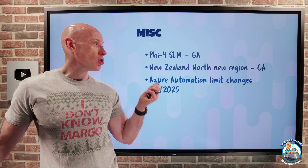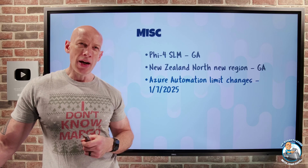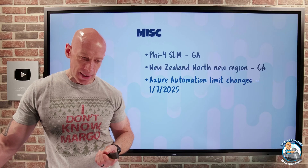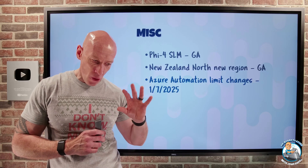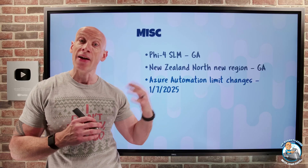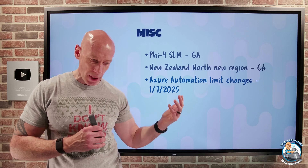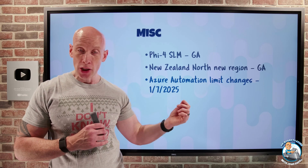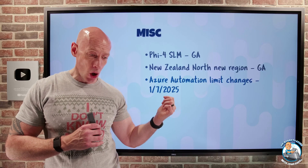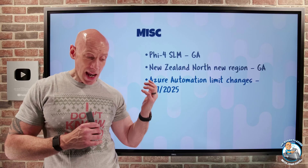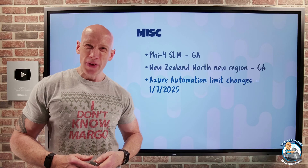There are changes to Azure Automation accounts and concurrent jobs, aimed at making limits fairer. For automation accounts: enterprise or CSP subscriptions now have a limit of 10 (previously unlimited); pay-as-you-go, MSDN, or sponsored get 2; free or student get 1. For concurrent jobs: enterprise/CSP goes from 200 down to 50; everything else gets 10, except free and student which get 5.